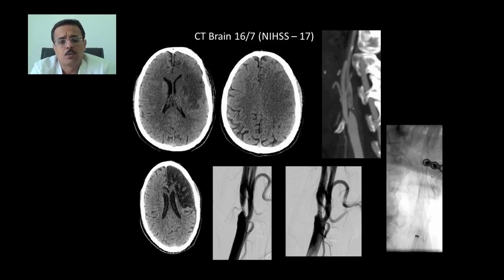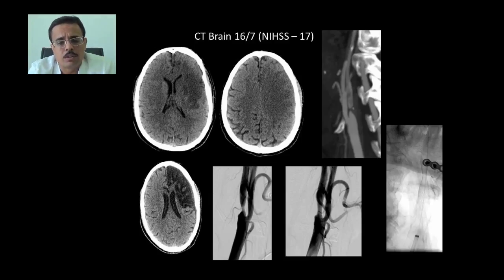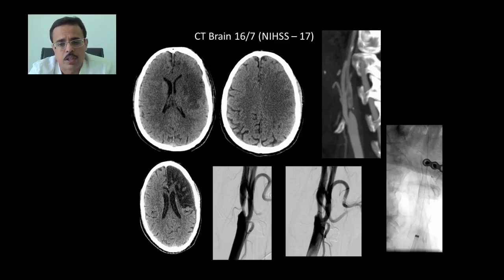Sometimes one has to wait. This patient came with a large infarction in the left MCA territory. In such large infarctions, if you open up the artery in the acute state, there is a risk of reperfusion hemorrhage. CT angiography showed severe stenosis, but we waited approximately 5 weeks, after which we performed stenting of the severe stenosis with stent placement.